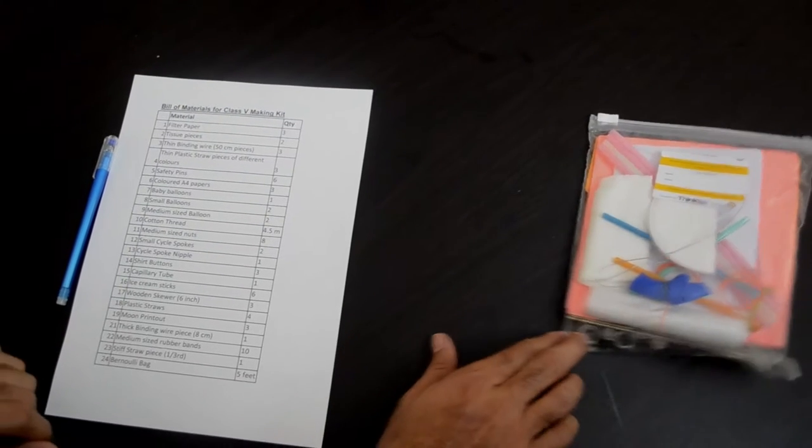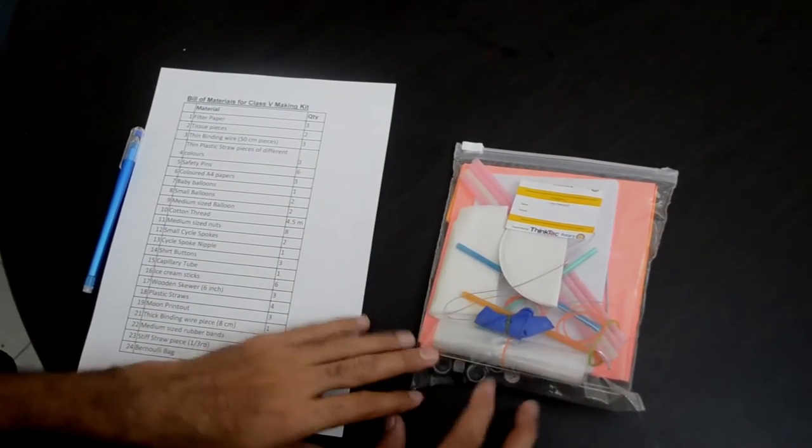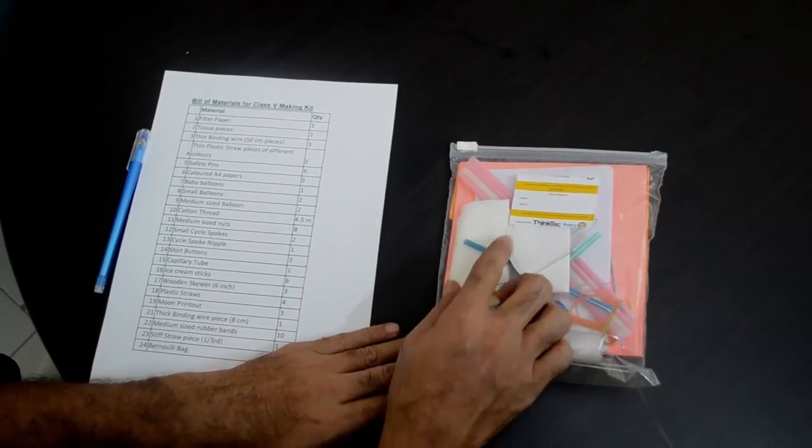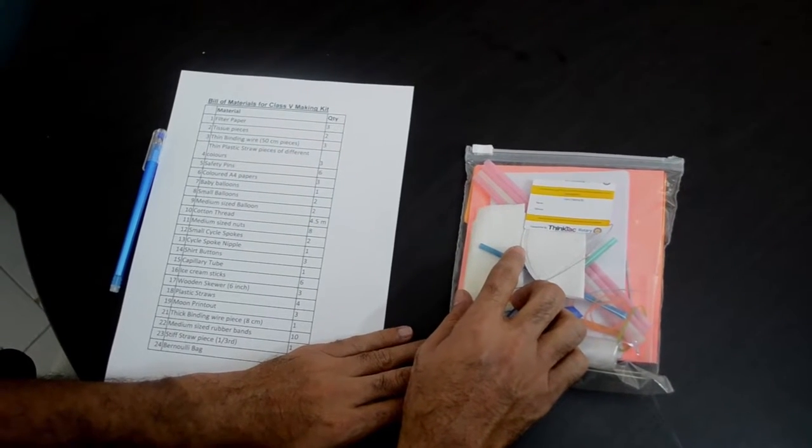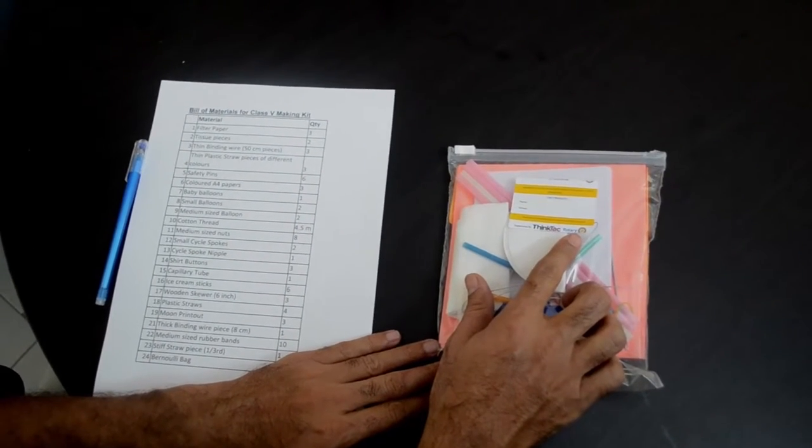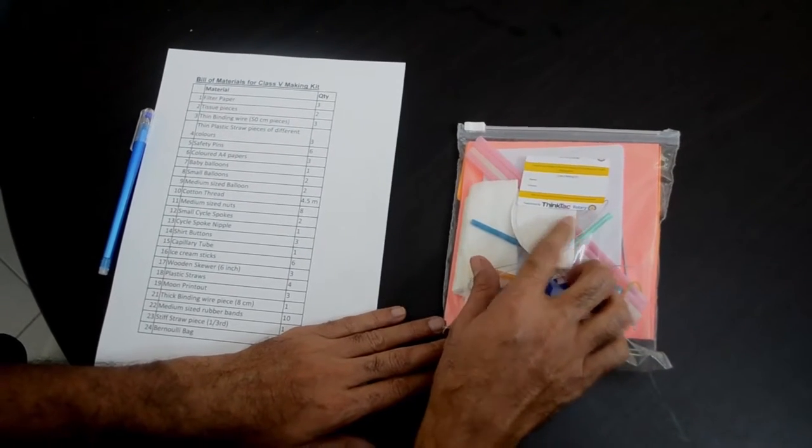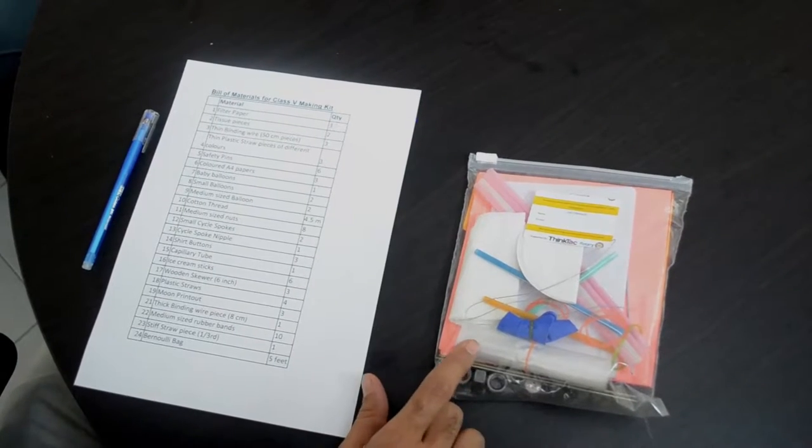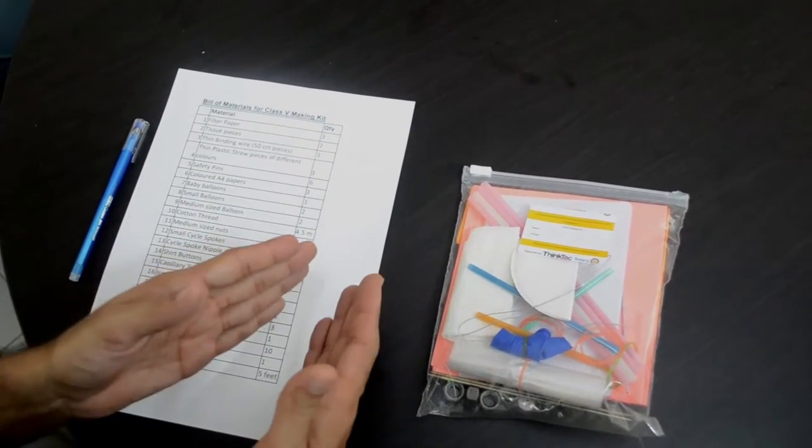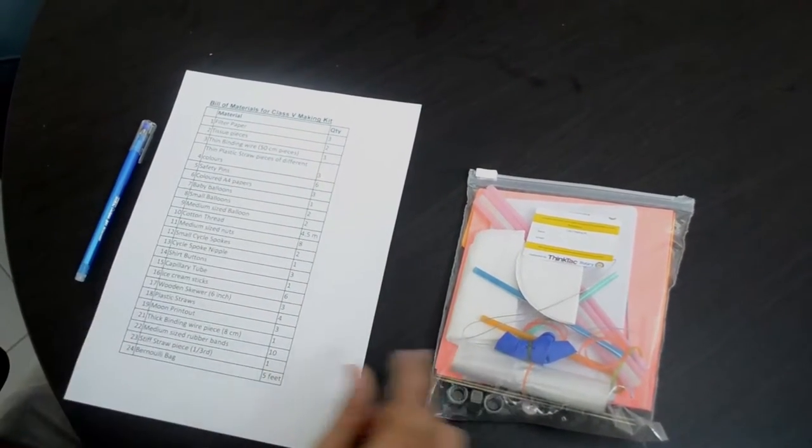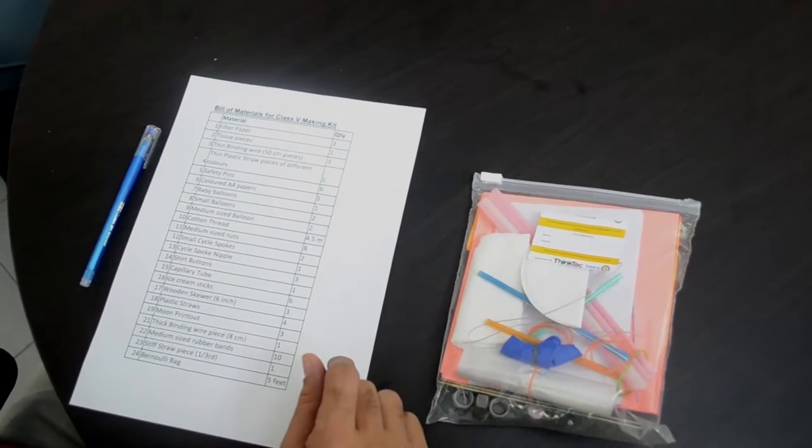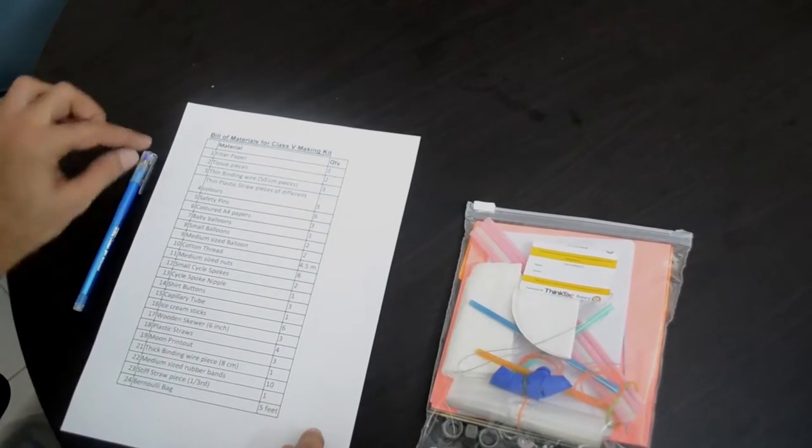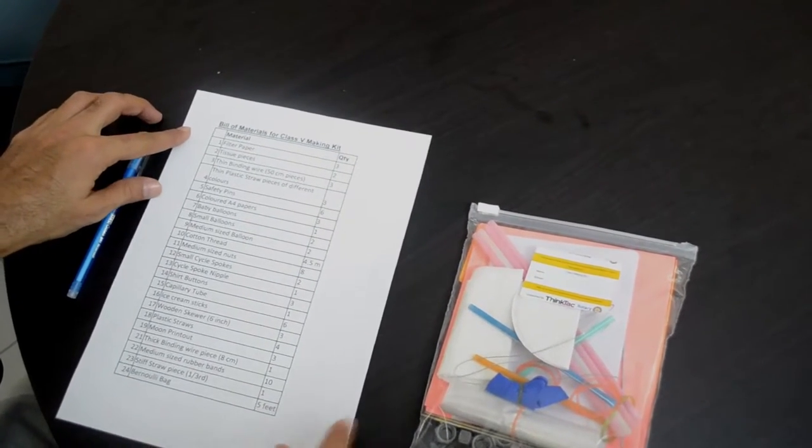A warm Namaste to all the teachers and children. You would have received these kits which have been supported by Rotary Gandh Devi and ThinkTag Bangalore. Since there are small items which are delicate and some items which can be easily missed out, we thought it's important that we take you through all the materials present in each kit.